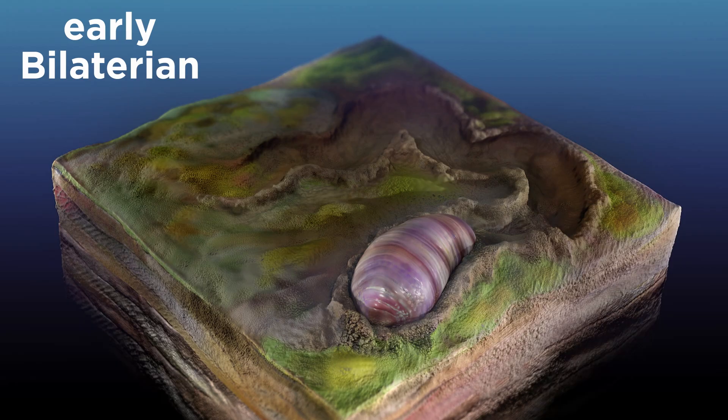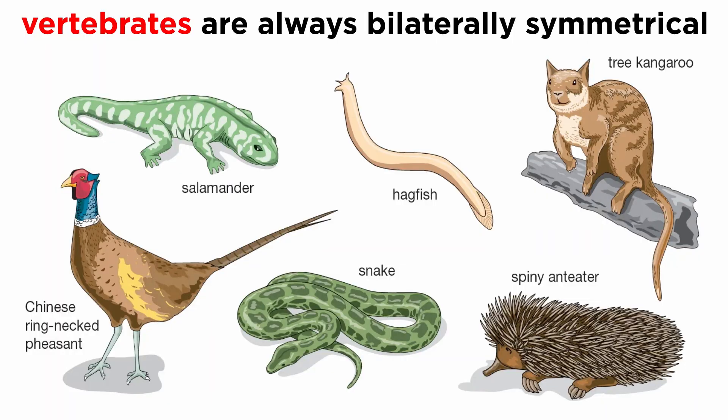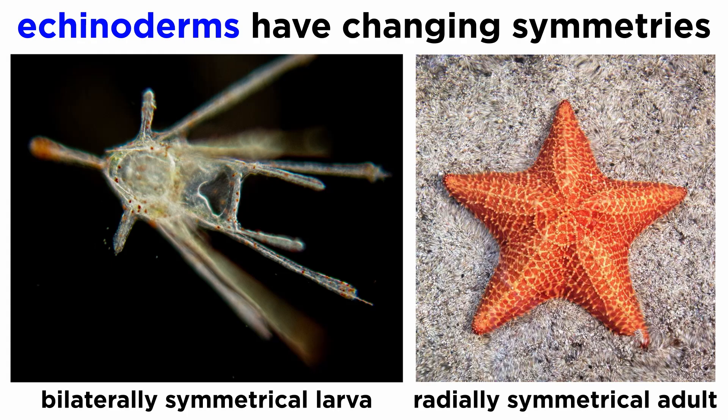All these phyla evolved from bilaterally symmetrical ancestors which demonstrated bilateral symmetry at some point in their lives. Though some Deuterostomes, like the vertebrates, are always bilaterally symmetrical, others, like the Echinoderms, produce larvae that are bilaterally symmetrical whereas the adults are radially symmetrical.